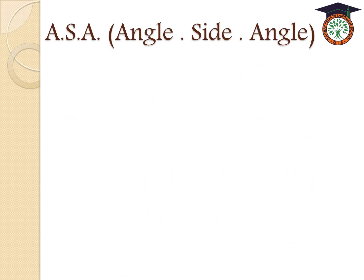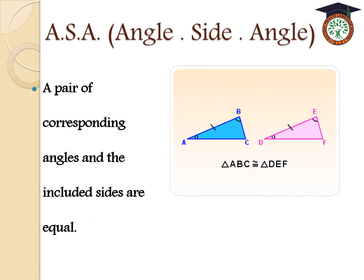The third case is ASA — Angle-Side-Angle: a pair of corresponding angles and the included side are equal. Here, angle A equals angle D and angle B equals angle E. The included side AB in the first triangle equals DE in the second triangle.